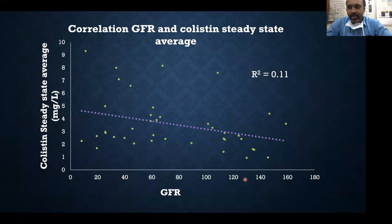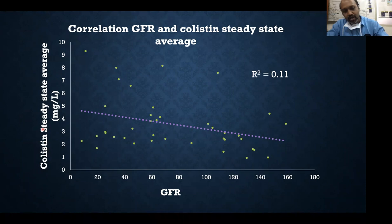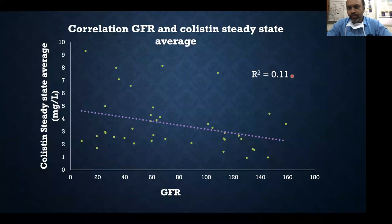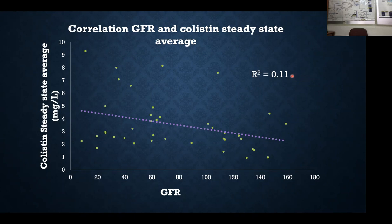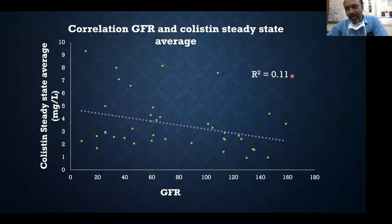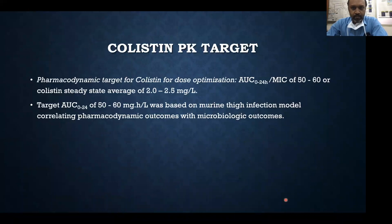If you decide to dose colistin based on GFR, there is no good correlation. From our data, the exposure to colistin is not well correlated with GFR — the R-squared is only 0.11. Even if you consider GFR, in many cases you may dose the patient either too high or too low. So GFR-based dosing for colistin is again not very reliable.